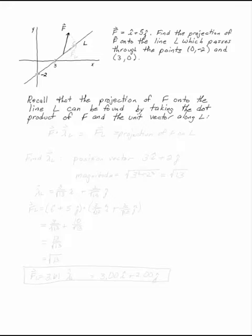F is the vector i plus 5j. Find the projection of F onto the line L, which passes through the points 0, negative 2, and 3, 0.